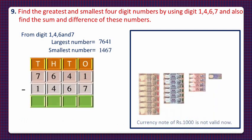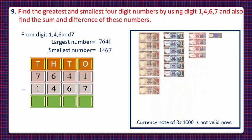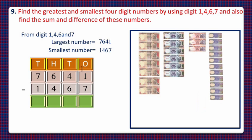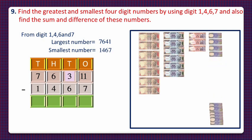Now to find the difference, we will take the currency notes for 7641. Since we have only 1 one, we'll convert 1 ten-rupee note into 10 ones, giving us 11 ones, and tens reduce from 4 to 3. We subtract 7 ones from 11 ones and are left with 4 ones, so we'll write 4 in the ones column.